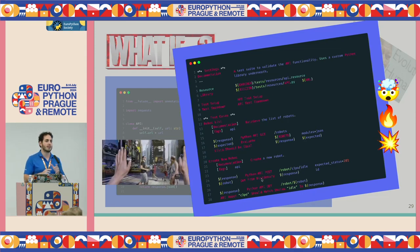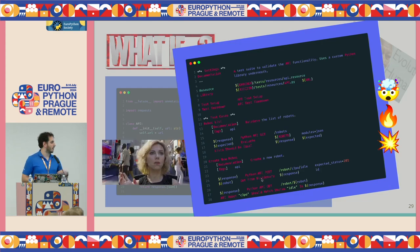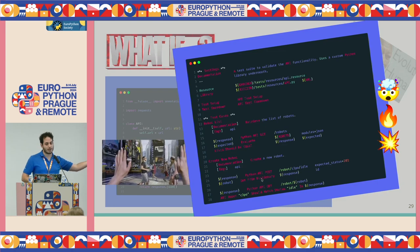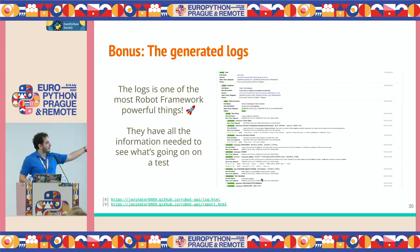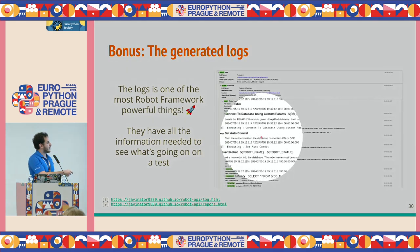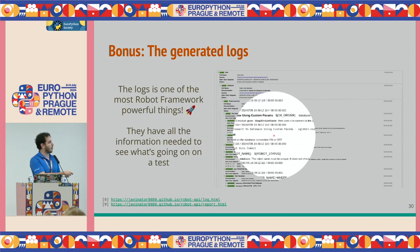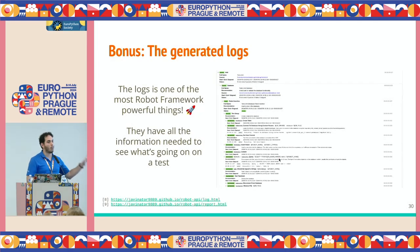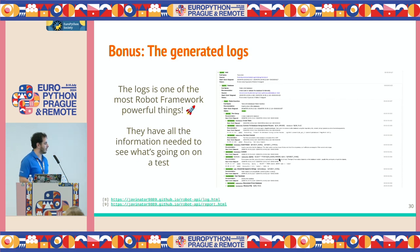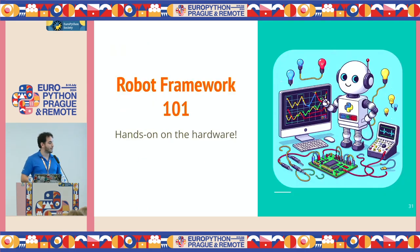And then we get these fancy logs. These logs have all the information on what happened in the test — the setup things, the keywords, the logging that happened underneath. This is quite powerful, but talking about logs alone would be at least a workshop. So I'm going to pass over it quickly. That's Robot Framework — that's the overall look of it.